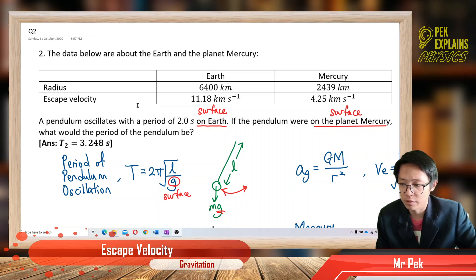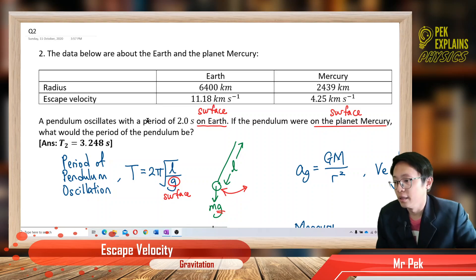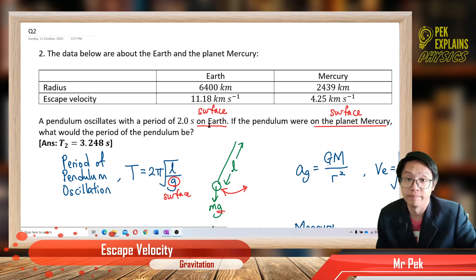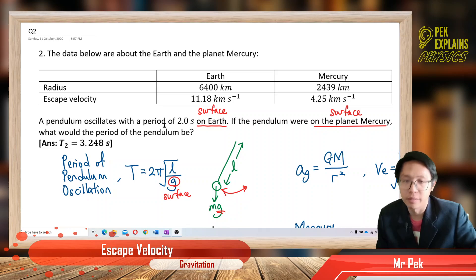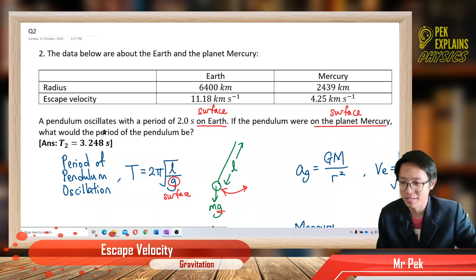We have their radius and escape velocity. Escape velocity is from the surface of the planet. A pendulum oscillates with a period of 2 seconds on Earth. The pendulum should be on the Earth's surface, not in space — the pendulum oscillates on the surface of the Earth.